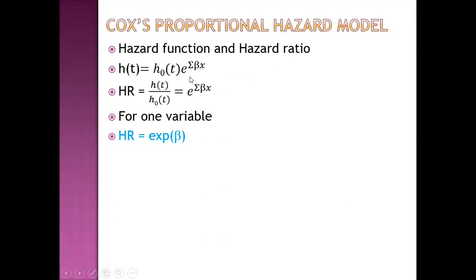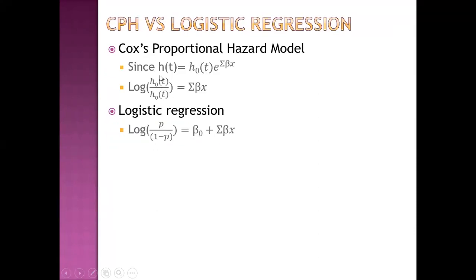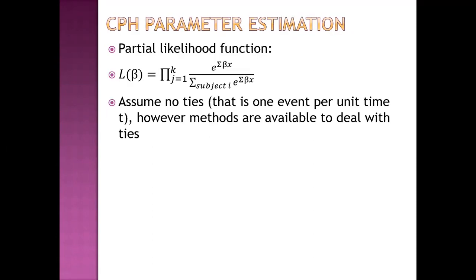The hazard function and hazard ratio in Cox Proportional Hazard Model are given by specific formulas. For one variable, the hazard ratio equals e to the power beta. Cox Proportional Hazard Model is very similar to logistic regression, except that the intercept is absorbed in the baseline function, so we do not get an intercept in the results. Parameters are estimated using the log-likelihood method.